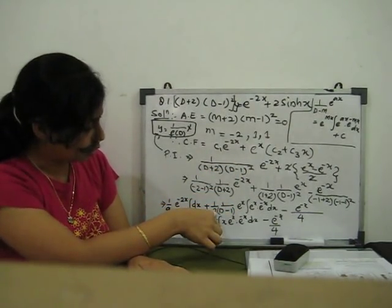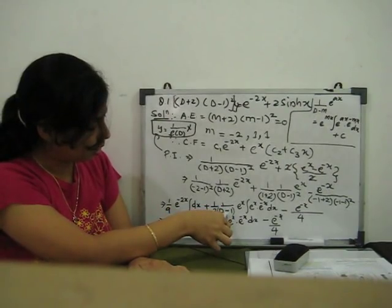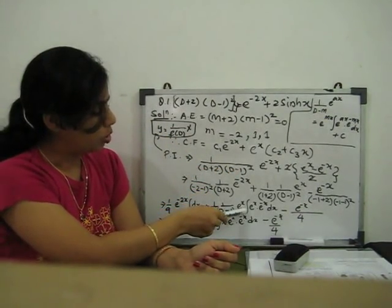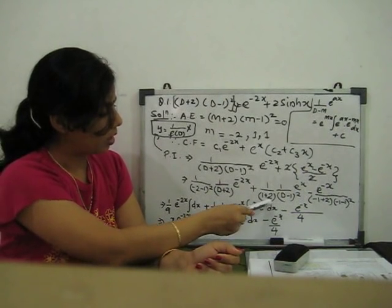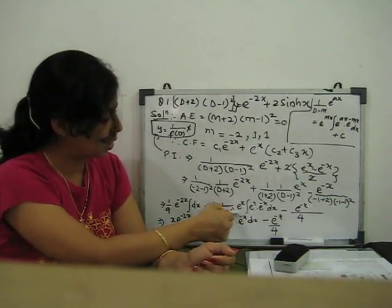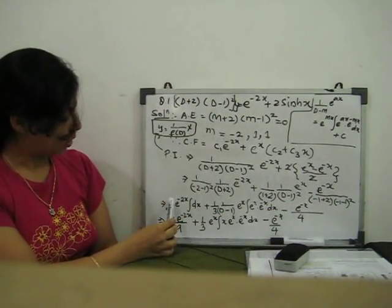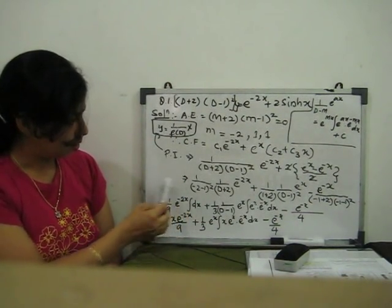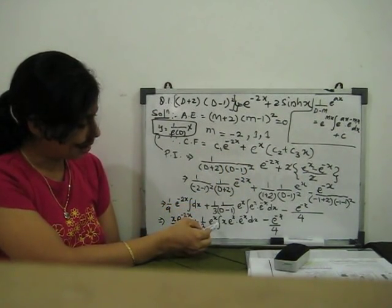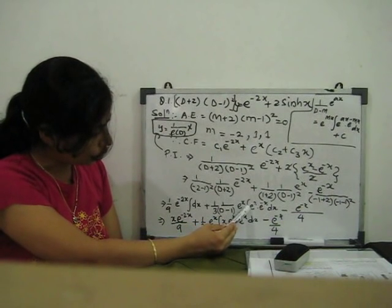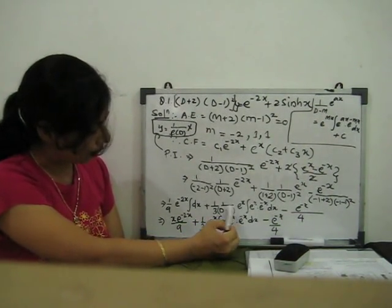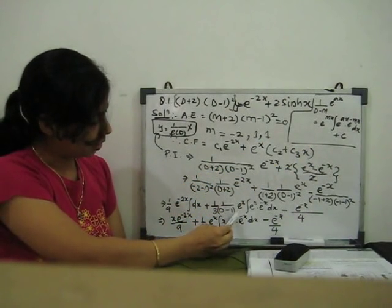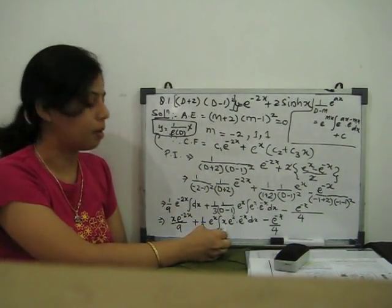Applying the formula once to 1/(D − 1): e^x · ∫e^x · e^(−x) dx = e^x · ∫dx = x·e^x. Then applying again to 1/(D − 1): e^x · ∫x·e^x · e^(−x) dx = e^x · ∫x dx = e^x · x²/2. Multiplied by 1/3 from before, the second PI part is x²·e^x/6. For the third part, e^(−x): putting D = −1, neither factor goes to zero, so direct substitution gives (−1 + 2)(−1 − 1)² = (1)(4) = 4, so the third PI part is −e^(−x)/4.